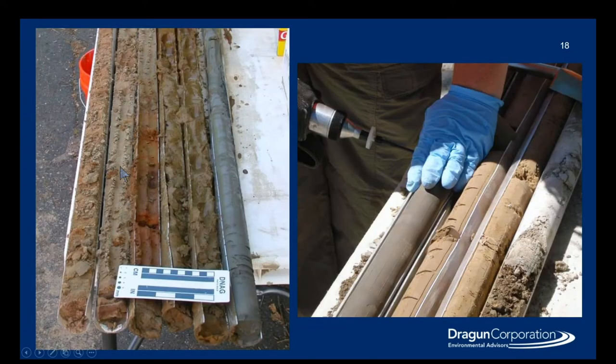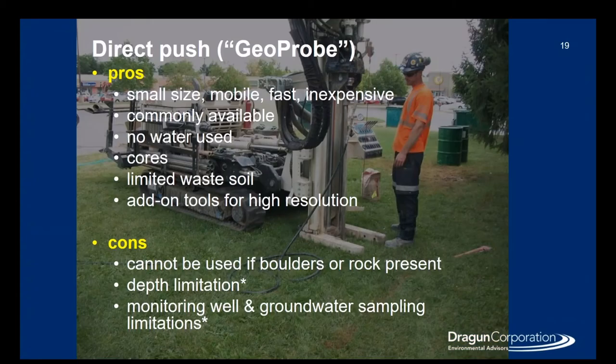The sampling is done and a four to five foot sampler comes up from the rig, and we get these cores of soil in acetate liners, about an inch and a half in diameter, which we use to classify and describe the soil. Some of the pros for the direct push method: they're small in size, mobile, fast, and inexpensive. They're commonly available, no water is introduced during the drilling, and you come up with nice core samples for the entire length of your boring. There's limited waste, and you can add on tools for high resolution characterization.